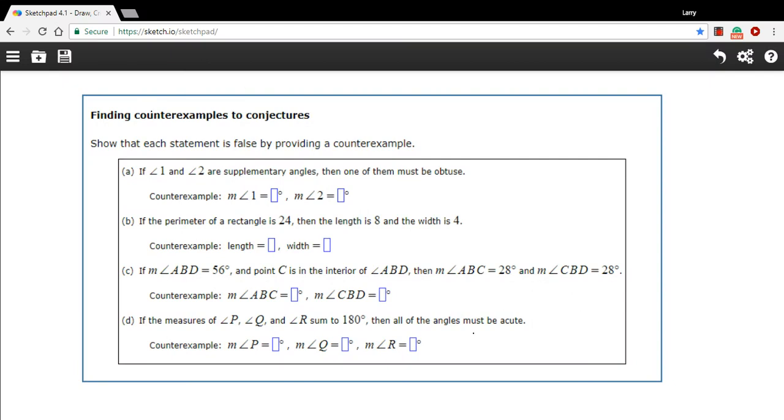In these problems we are finding counterexamples. If you want to prove a statement false, finding a counterexample, a situation where the statement is not true, is a great way to do that. We call statements that haven't been proved to be true yet conjectures—that's a fancy word for a guess—and we can prove that a conjecture is false by coming up with a counterexample. That's what we're doing here.